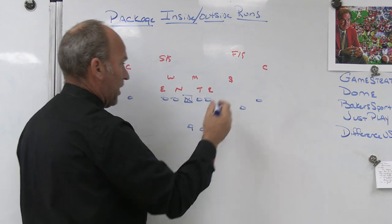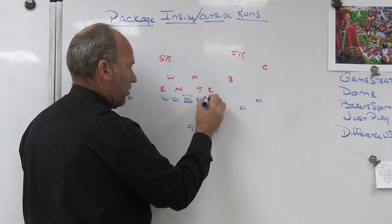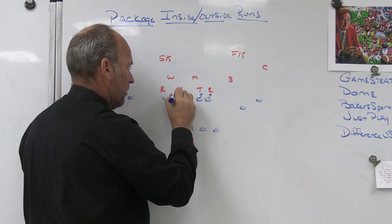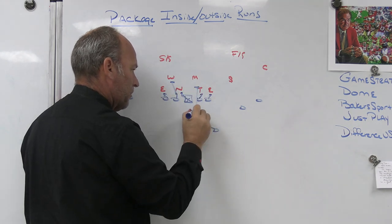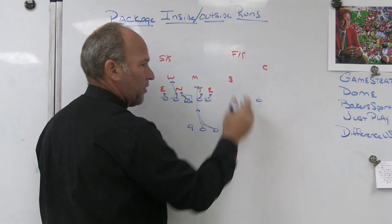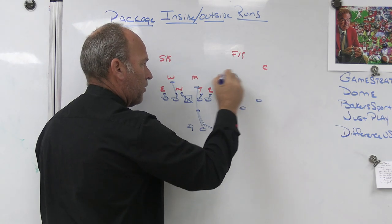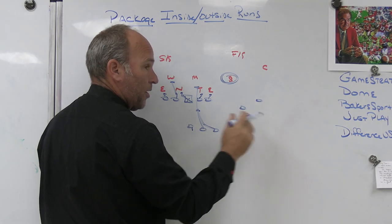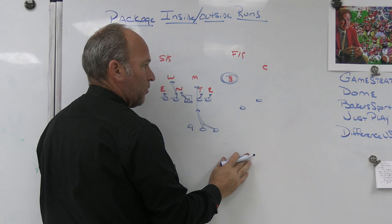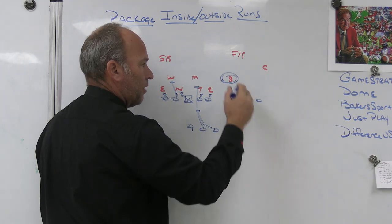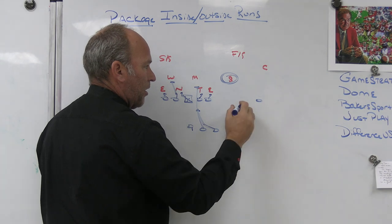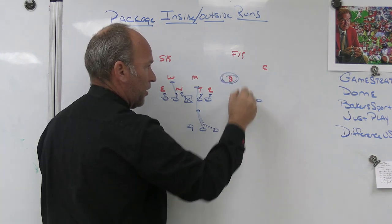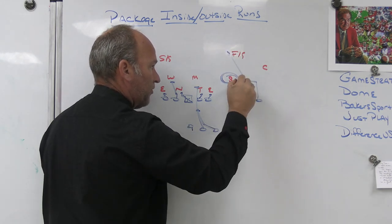So if we did it to the two receiver side, it'd be the same thing. We pair our lock run. So we pair our lock inside theory with an RPO theory. So now we've got to figure out what do we want to do if we're RPOing off the nickel or the sam. Do we want to run, there's several versions of different things you can run out here. Do you like trying to take a shot? Do you want to go glance to two, fin to one?